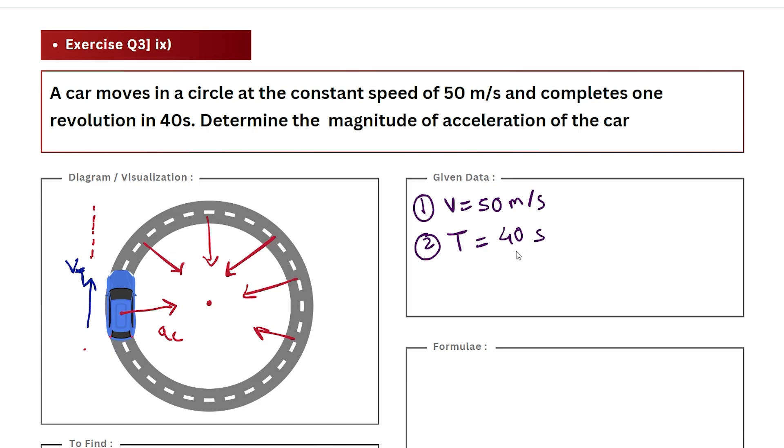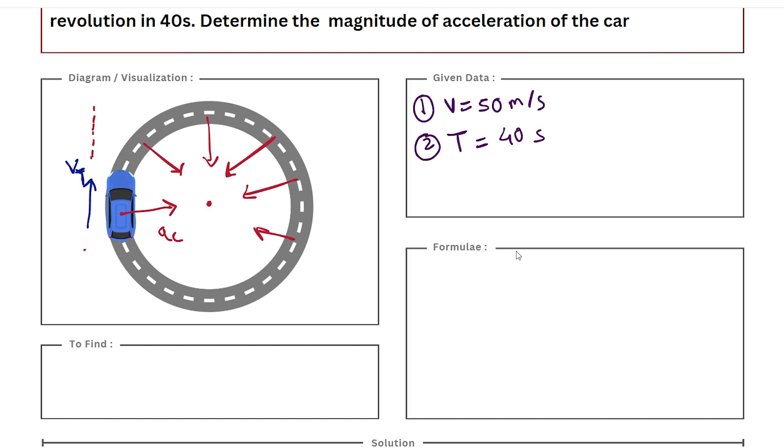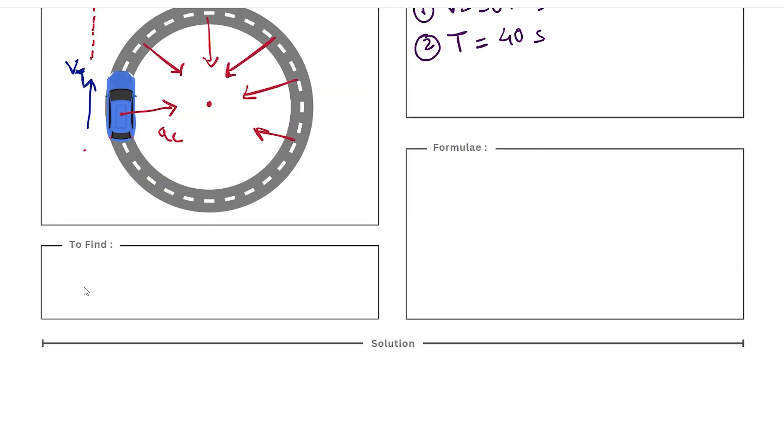And there's nothing else given, so let's quickly go to our 'to find' section. We only have to find one value in this particular example, and that is the acceleration—in this case, the centripetal acceleration.